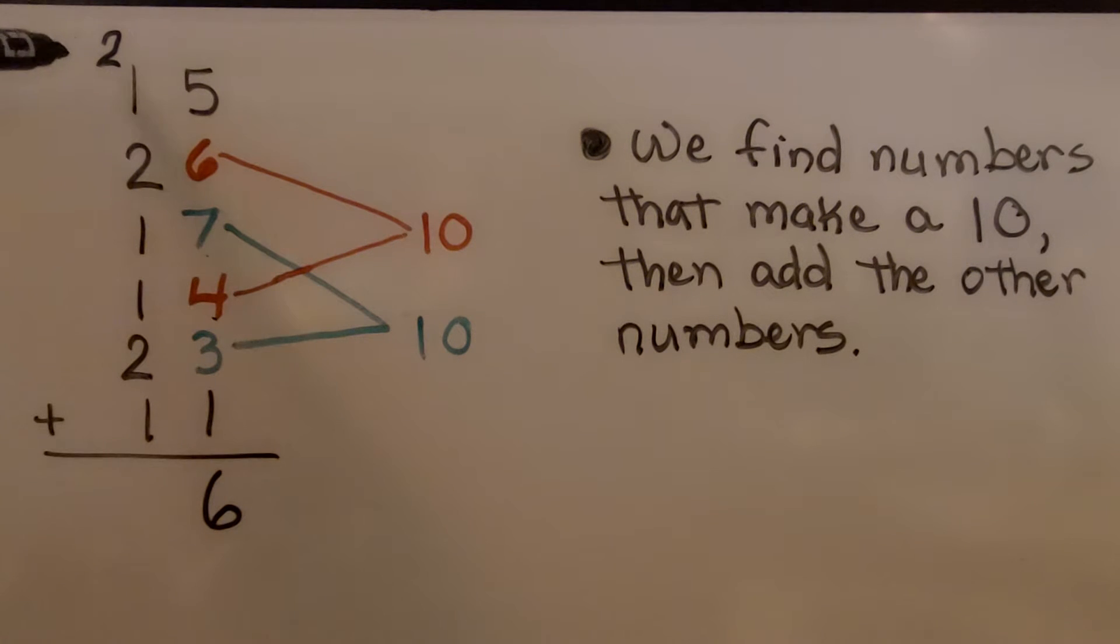I can skip count the twos: 2, 4, 6. And then I can count the ones: 7, 8, 9, 10. We have 10. We have 106.